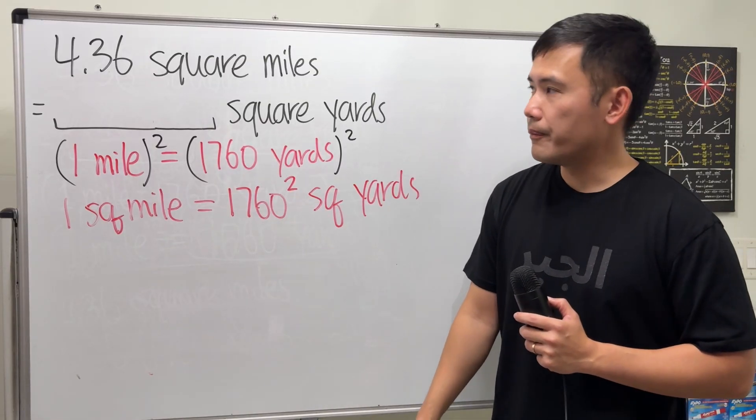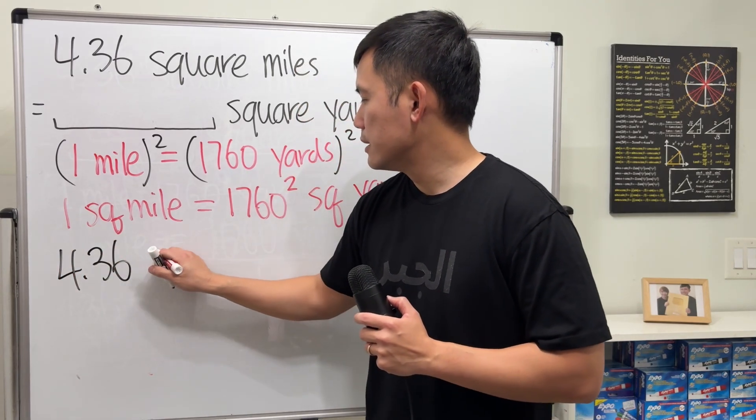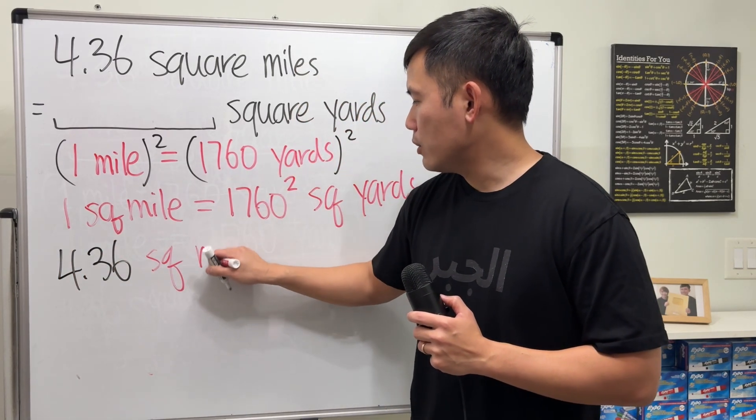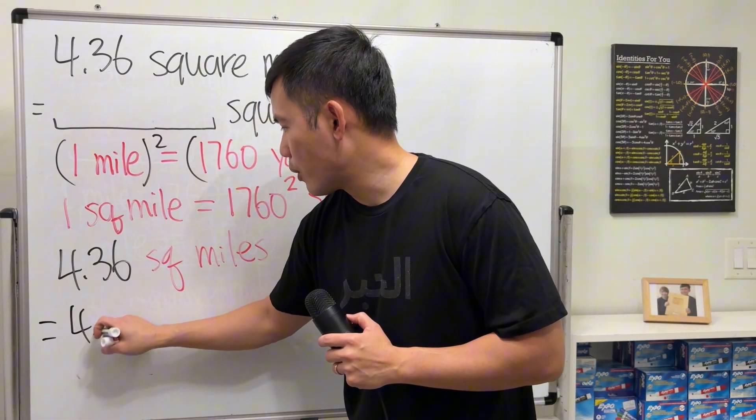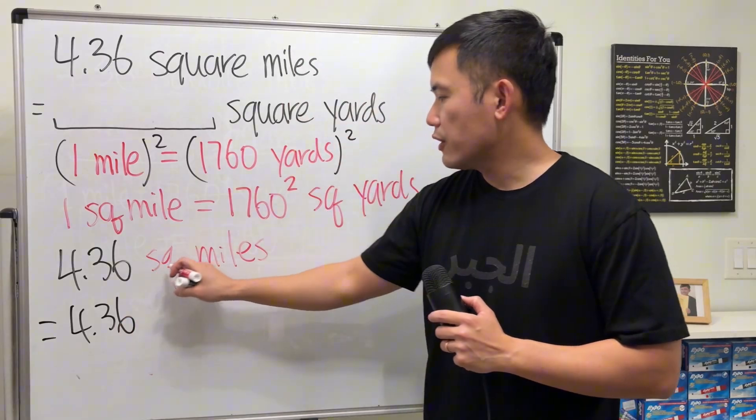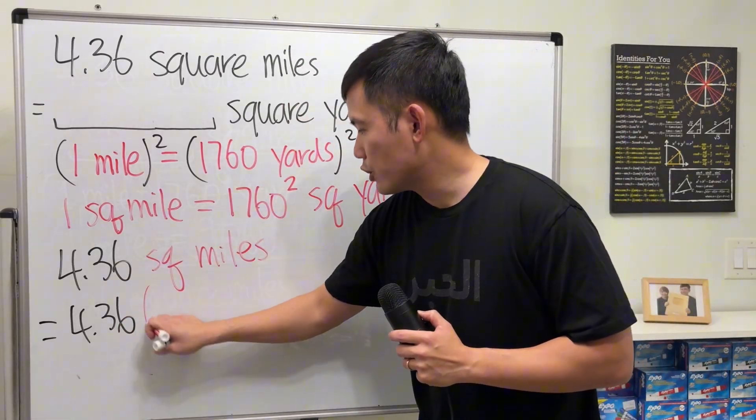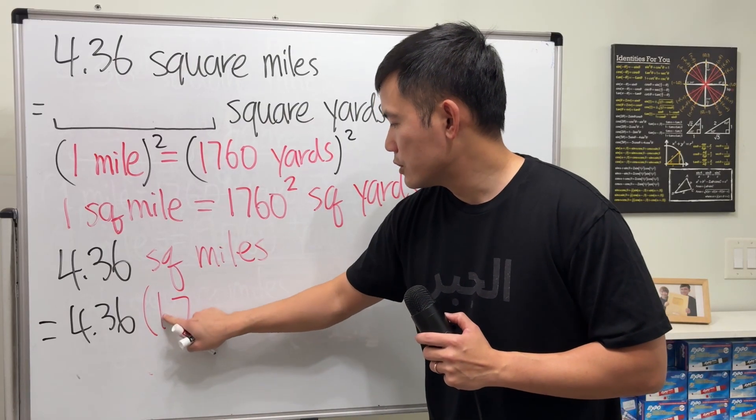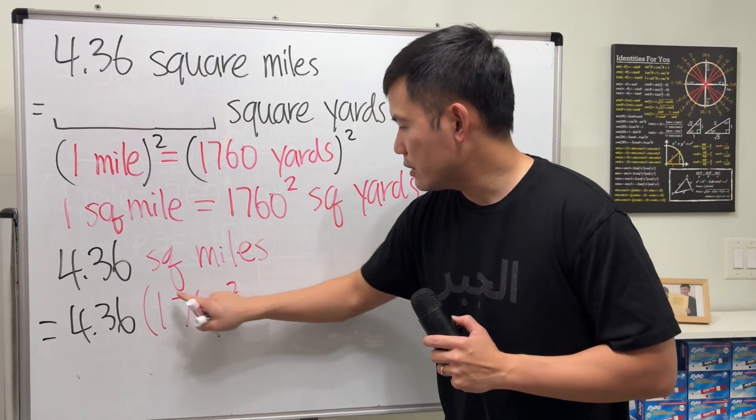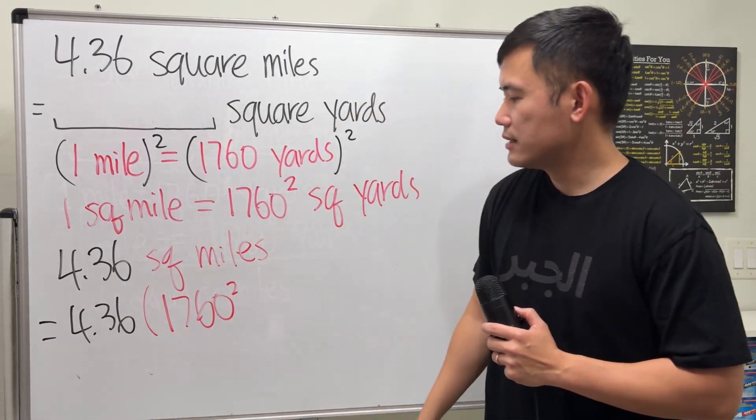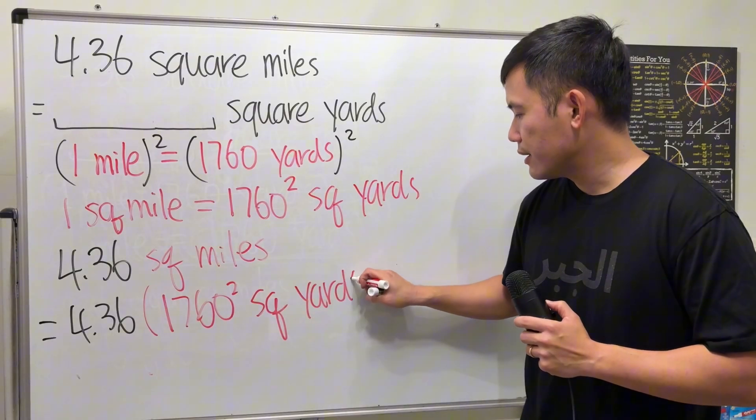So now, here we go. 4.36 square miles. This is going to be equal to 4.36. Instead of writing this down, we are going to write this down. And it's going to be a multiplication. 1760 square. This is 1,760 square. And then square yards.